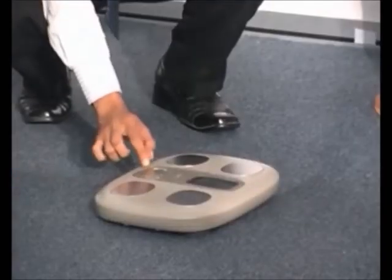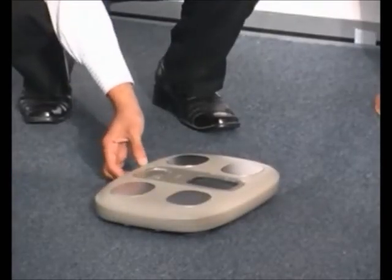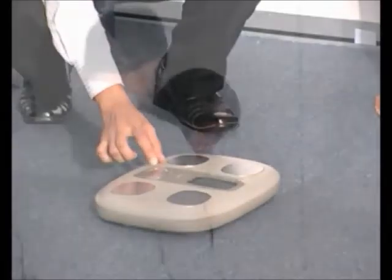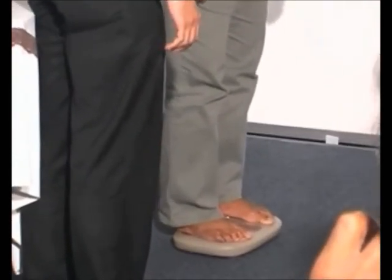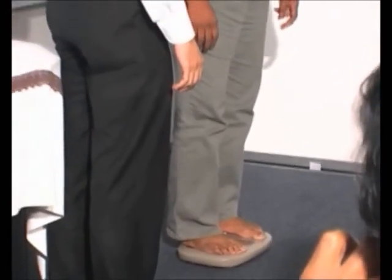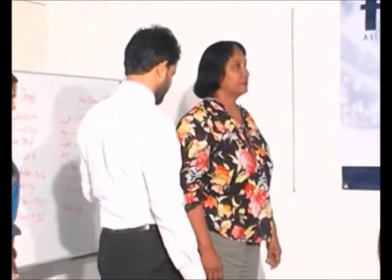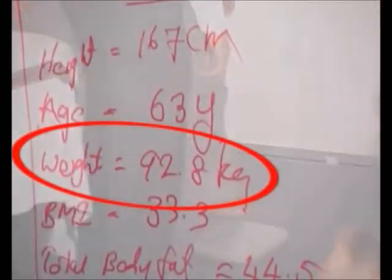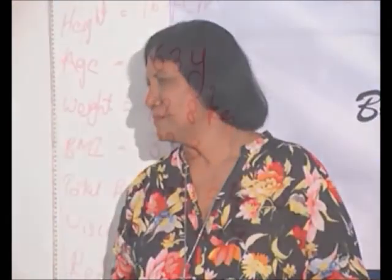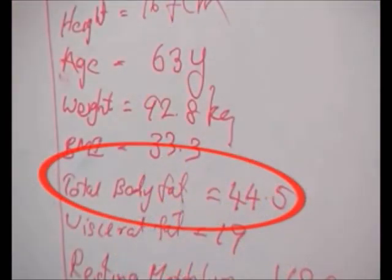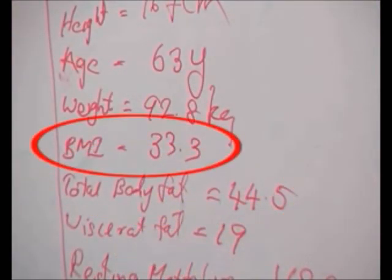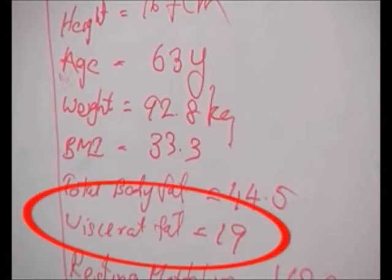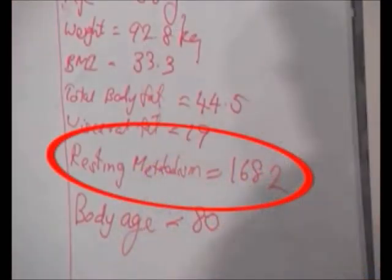For the second volunteer, I am setting up the machine again. His height is 167 cm and his age is 63. His measured weight gives a body fat percentage of 44.5%, a BMI of 33.3, and a visceral fat level of 19. His resting metabolic rate is 1,682.